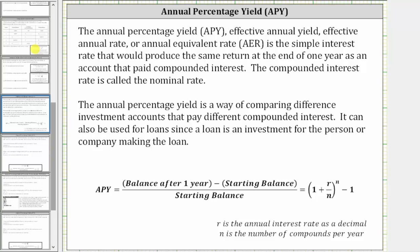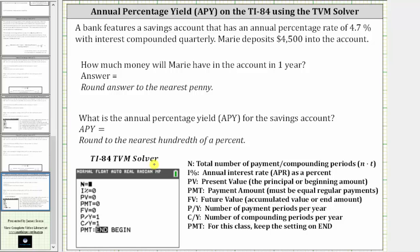Remember, the APY is the simple interest rate that would produce the same return at the end of one year as an account that paid compounded interest. And while there are formulas to determine the APY, in this video we will be using the TI-84 TVM solver to determine the account balance after one year, as well as the APY.